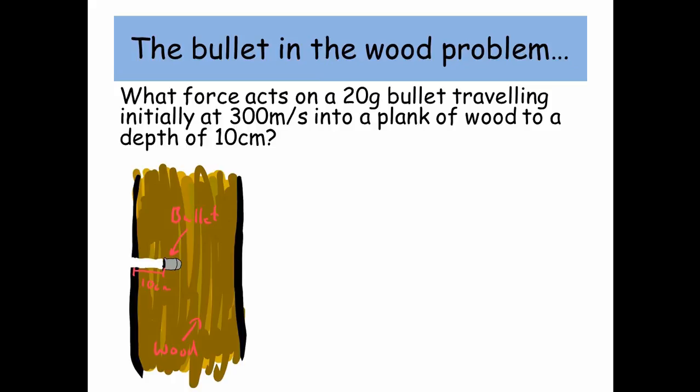I'm going to show you two different approaches. Firstly let's look at the SUVAT equations and see what we know. The bullet enters the wood at a depth of 10 centimeters which is 0.1 meters. The initial velocity is 300 meters per second.